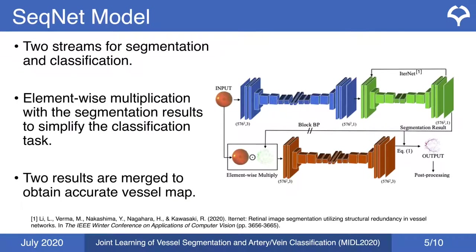We call our network SEQNET, which stands for Sequence Network, as it performs segmentation and classification sequentially. It contains two different streams for segmentation and classification. We use our earlier proposed segmentation network, ITERNET, to segment the vessels. Then element-wise multiplication of the raw image and segmentation map is performed to simplify the classification task, followed by a U-Net-like network for classification. Both networks use cross-entropy loss and train jointly.